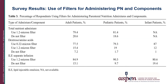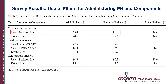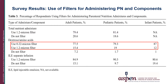Survey participants were asked about the use of filters with a variety of parenteral nutrition presentations by patient age. For respondents administering total nutrient admixtures to adult or pediatric patients, approximately 80% use a 1.2 micron filter. For respondents administering dextrose amino acid admixtures, most responded that they use a 0.22 micron filter for administering this type of parenteral nutrition to adult, pediatric, and infant patients. Less than 20% responded that they use a 1.2 micron filter.